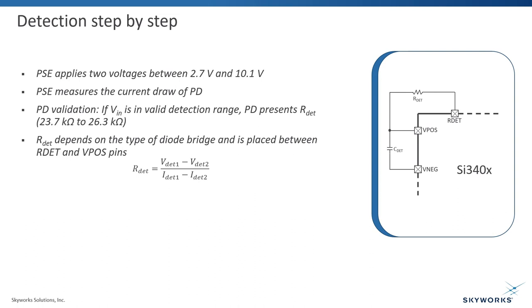For type 1 and type 2 devices, only two pairsets are powered, while for type 3 and type 4 devices, both pairsets can be powered. Hence, if PSE is providing power over 4 pairs, it has to do detection on both pairsets.